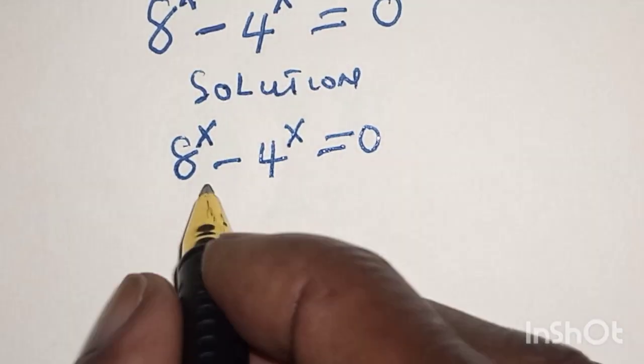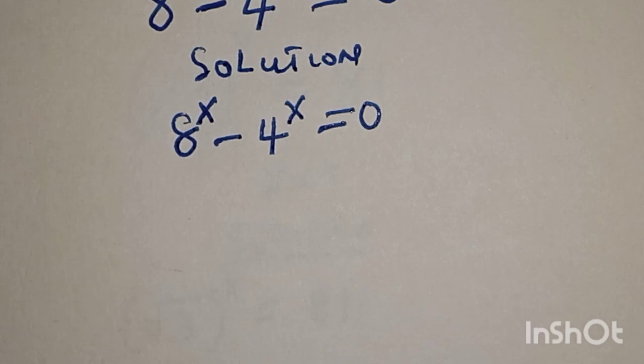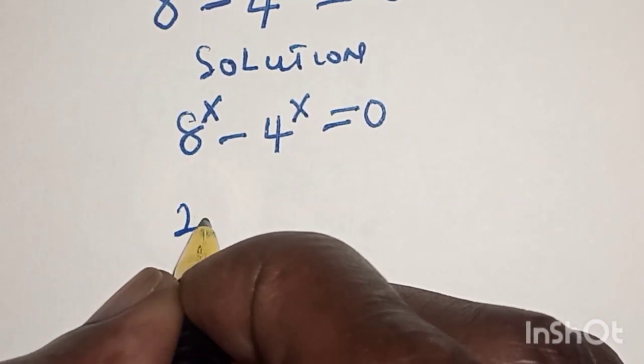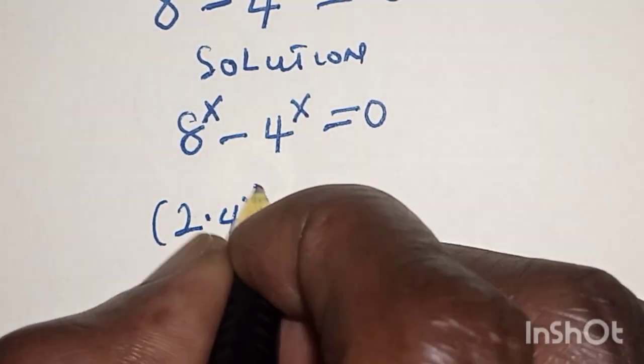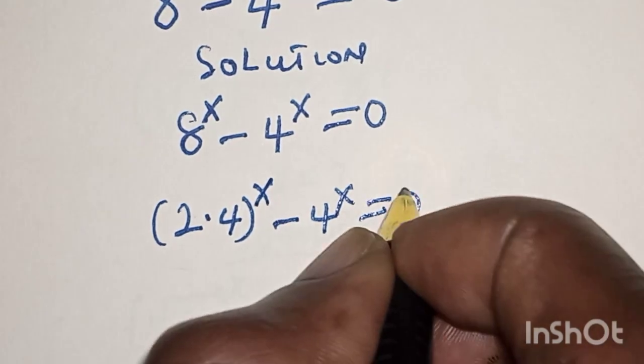So let's see. 8 raised to power x is the same thing as 2 multiplied by 4 raised to power x minus 4 raised to power x is equal to 0.